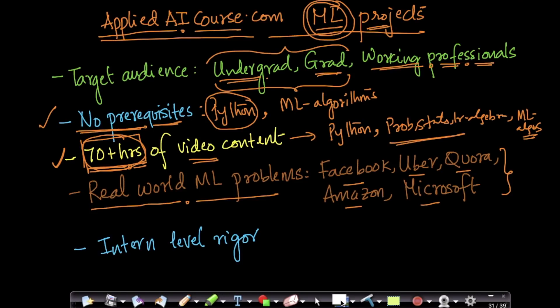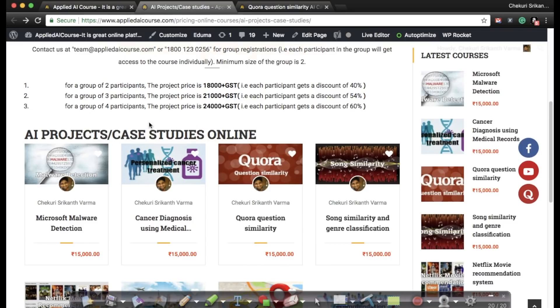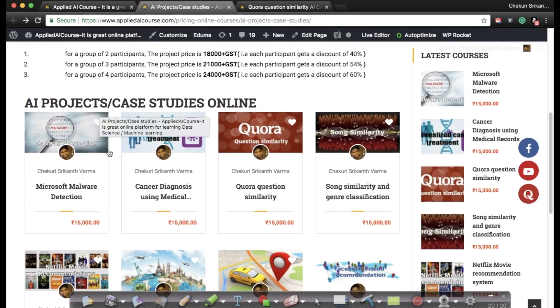To give you a flavor of some of our machine learning projects, what you could do is you could go to our home page. This is our home page which is AppliedAICourse.com. On our home page we have Applied AI projects and case studies. If you just click on view 10 plus case studies, it will take you to this page.